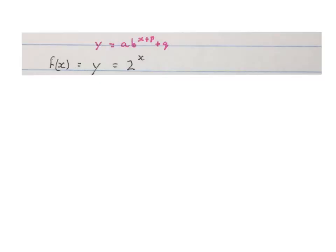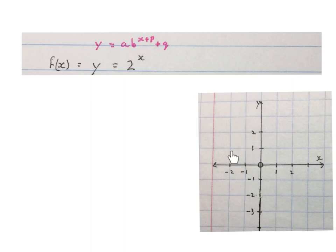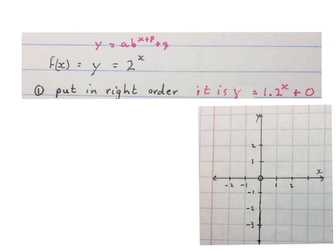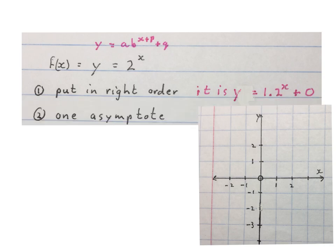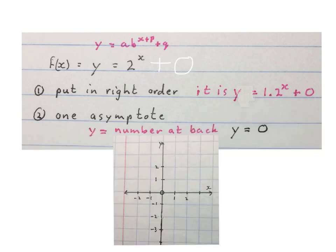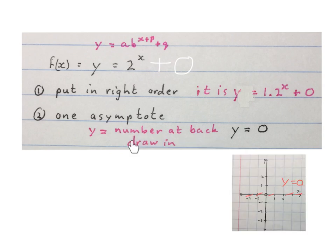Our first question: sketch f(x) = y = 2 to the power of x. I'm going to keep a rough Cartesian plane next to me to fill in information as I work it out. First, I put the equation in the right order: y equals 1 times 2 to the power of x plus 0. Next, we find the one asymptote on an exponential graph. The equation is always y equals the number at the back, so y equals 0. Indicate it on your Cartesian plane and write in the equation.